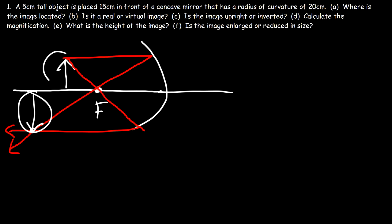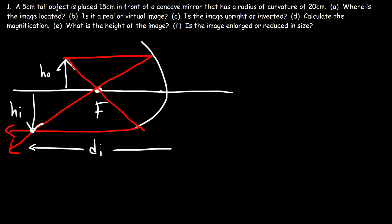This image is bigger than the object. If your drawing is not perfect, you can tell if the image is going to be enlarged or not — you just have to compare the height of the image with the height of the object. The distance between the image and the mirror is dI, the object distance is dO, and this is the focal length.